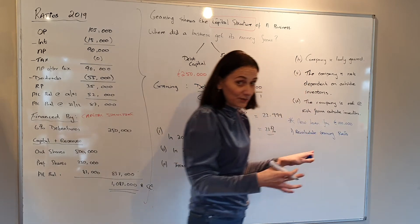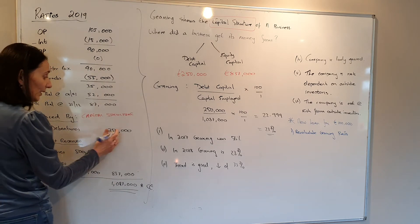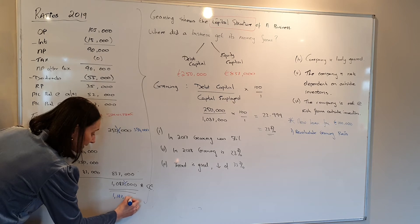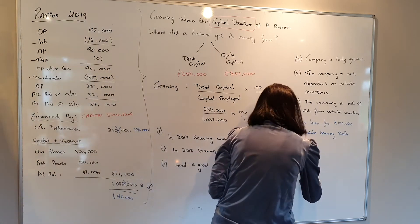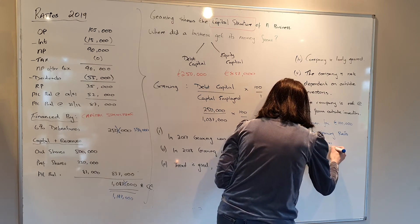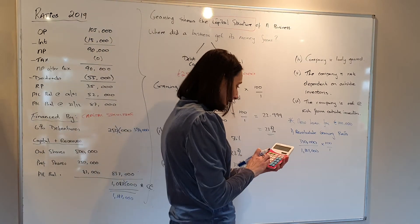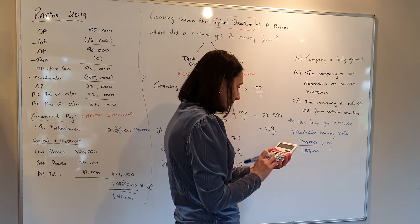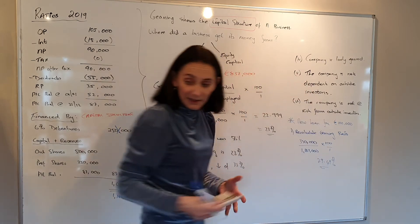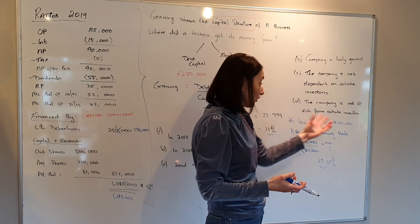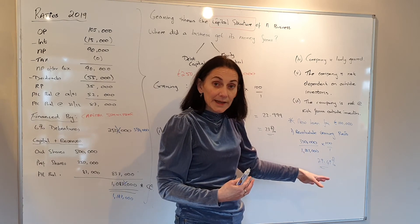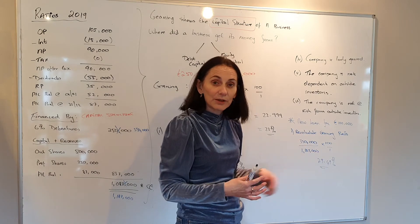Imagine in this question we got a new loan of 100,000. The debt capital would become 350,000 and capital employed would become 1,187,000. Recalculating: 350,000 / 1,187,000 = 29.49%. Your gearing would increase because you've borrowed more money, but you would still be lowly geared. Showing this recalculation and conclusion gets you full marks for gearing.